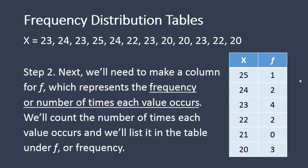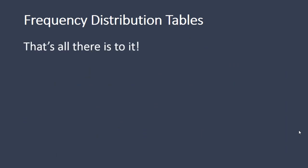It's very important to remember here that f stands for the frequency and X is the original value. So f tells you how many of the Xs that you actually have. We have 1 twenty-five, 2 twenty-fours, and so on. And that's really all there is to it for creating a frequency distribution table.